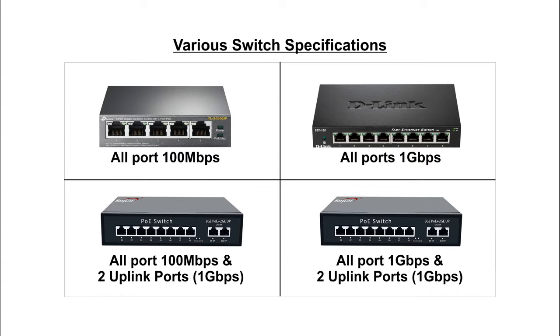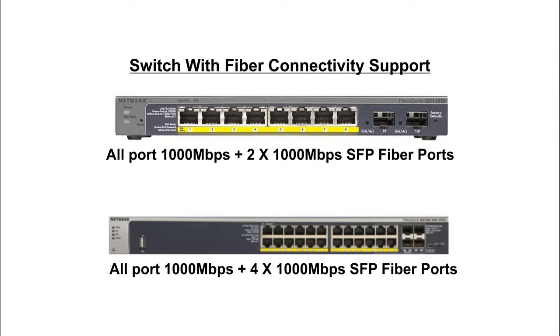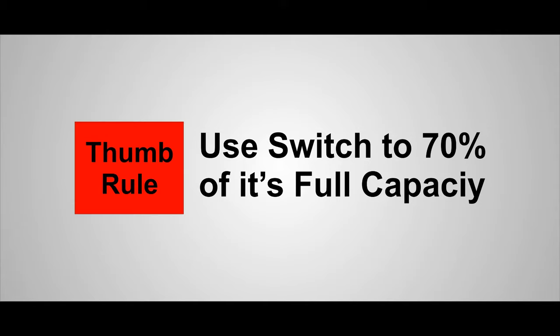Commonly available switch specifications are: all ports 100 Mbps; all ports 1 Gbps with additional 1 Gbps uplink ports; all 1 Gbps ports with additional 1 Gbps fiber uplink ports. Higher-spec switches are also available if required. As a thumb rule, never use a switch to its maximum capacity — a 100 Mbps switch should be used up to 70 Mbps (70%), and a 1 Gbps switch up to 700 Mbps.